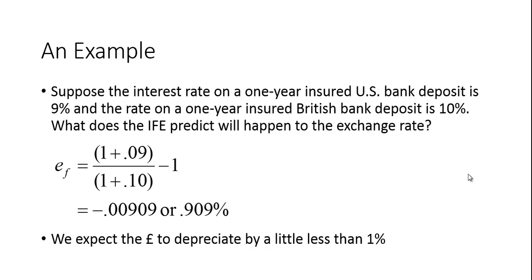Let's look at an example. Suppose the interest rate on a one-year insured U.S. bank deposit is 9% and the rate on a one-year insured British bank deposit is 10%. We specify insured deposits to ensure they carry the same level of risk — essentially risk-free. What does the international Fisher effect predict will happen to the exchange rate?